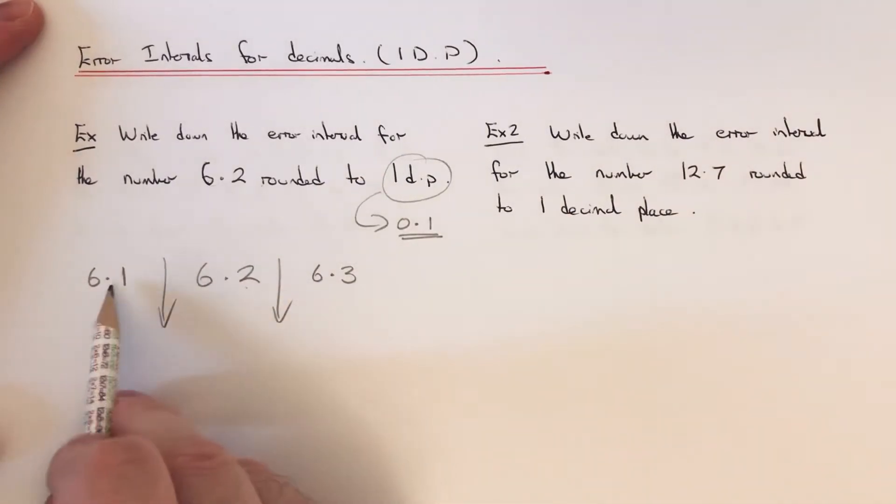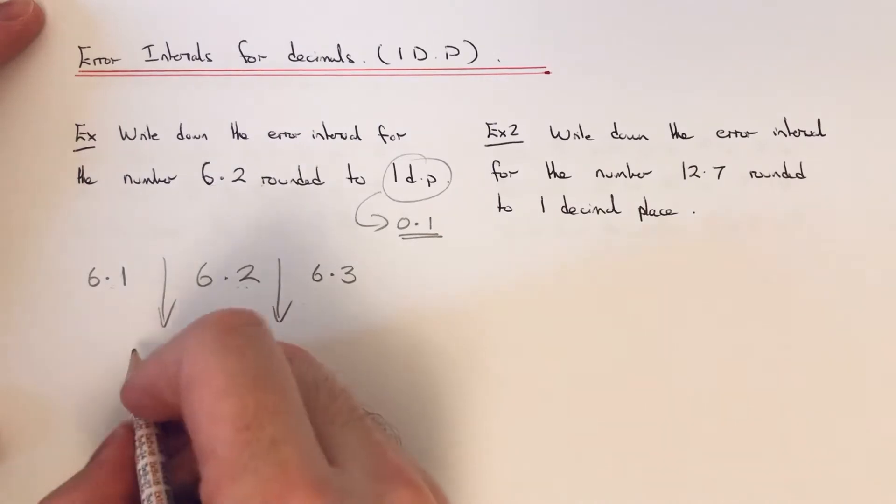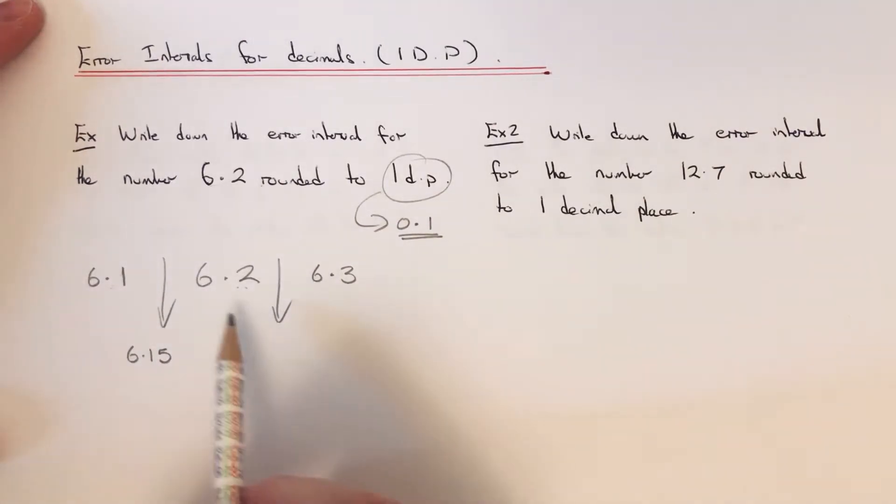So to get my error interval then, I just need to go halfway between 6.1 and 6.2. So halfway between these two numbers will be 6.15. If you have any trouble with this just add the two numbers up and then divide the answer by 2.